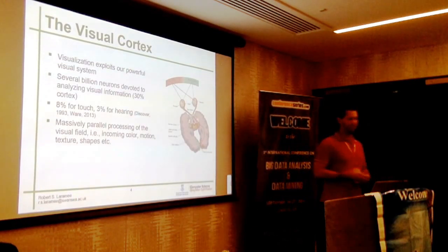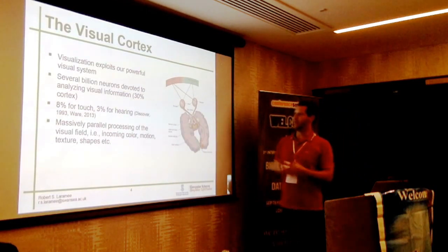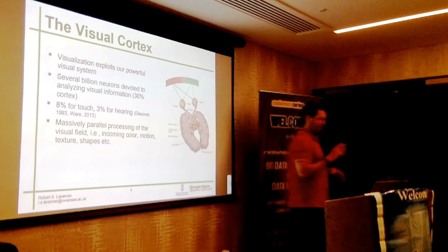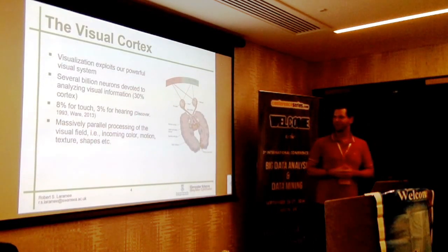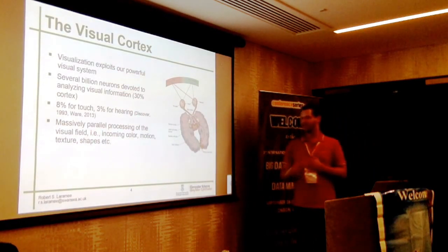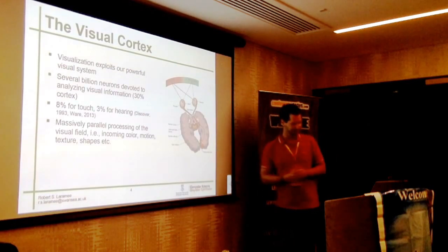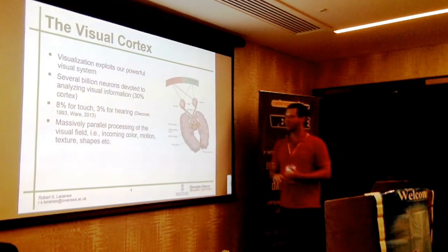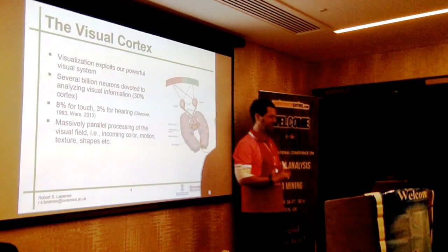To put that in context: we only have 8% of the cortex dedicated to touch and 3% for hearing. So we have anywhere from 4 to 10 times more cortex dedicated to visual processing than the other senses. It makes sense — no pun intended — to explore the visual processing power in our brains, which is dedicated to processing color, motion, texture, shapes, and so on.